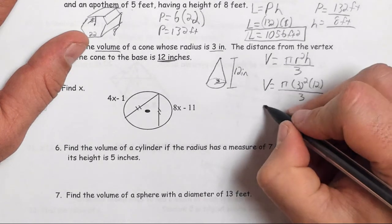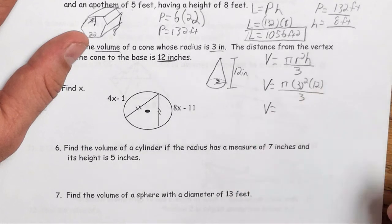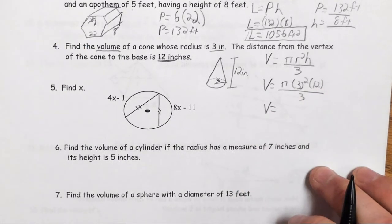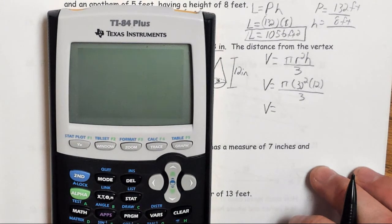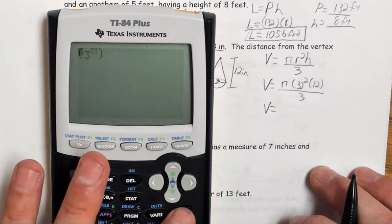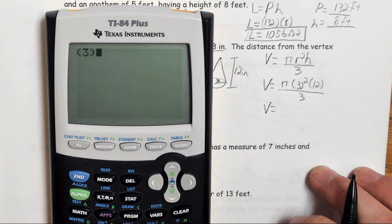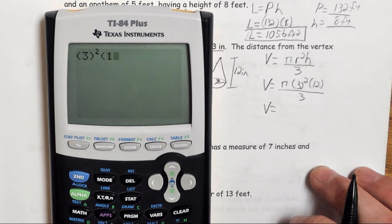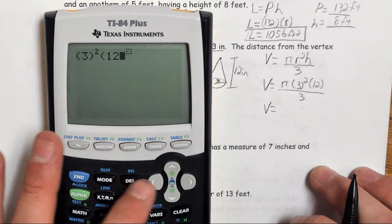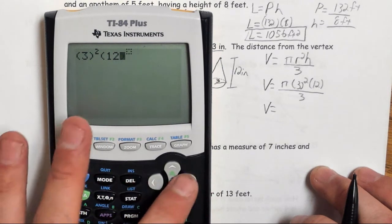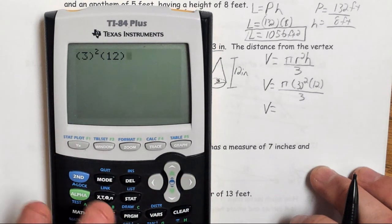And I'm going to answer this one two different ways. I'm going to leave it in pi form and also convert it because we've done it both ways. If I want to leave it in pi form, I just do the... actually, let me put my parentheses first. 3 squared times 12... I'm having problems with my buttons today... divided by 3.